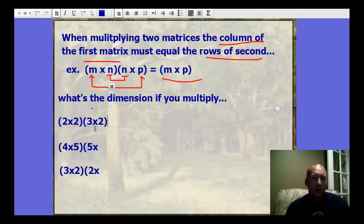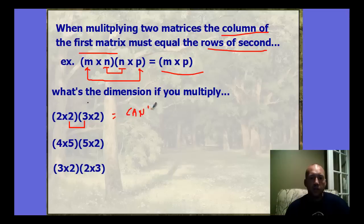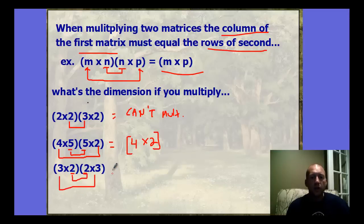To determine if multiplication is possible and find the result size: for the first example, columns of the first don't match rows of the second, so we can't multiply. For the second, both middle numbers are 5, so we can multiply — the result is a 4 by 2. For the third, the middle numbers are both 2, giving a 3 by 3 square result.